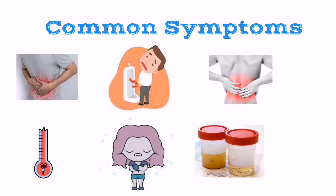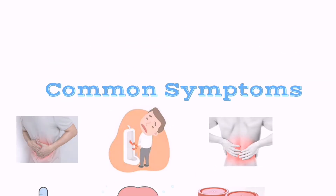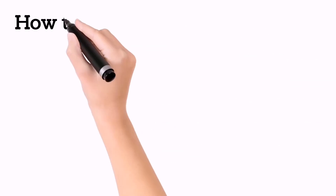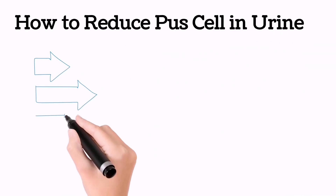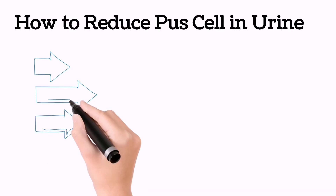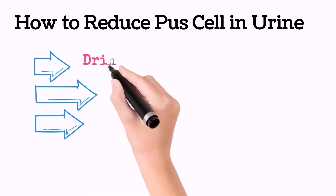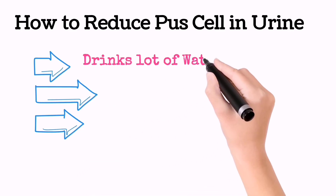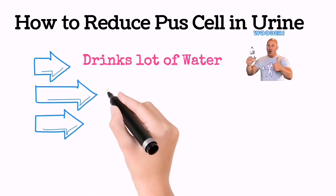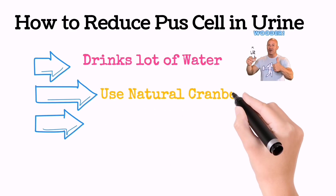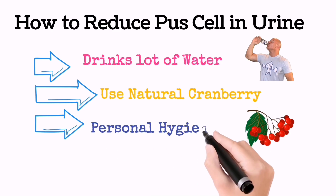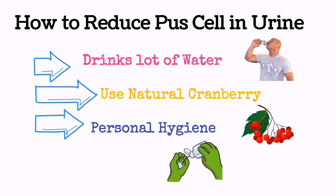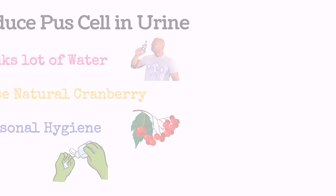Now, if a patient has a high pus cell count, how can we reduce it? By drinking lots of water, using natural cranberry, and maintaining personal hygiene can reduce the count of pus cells.